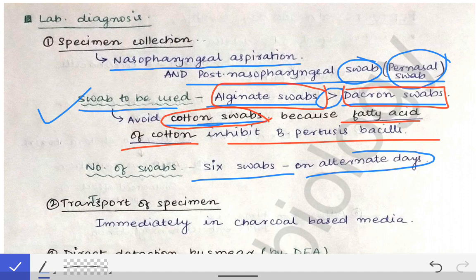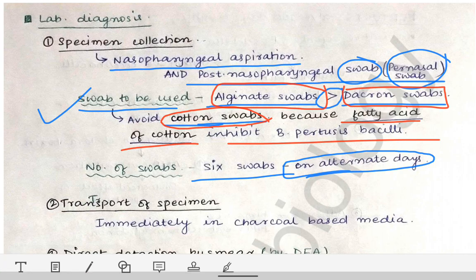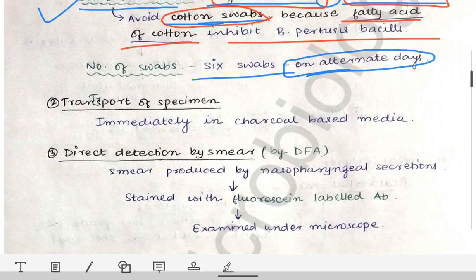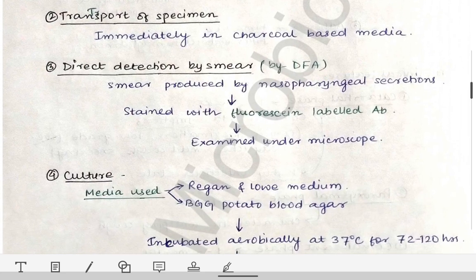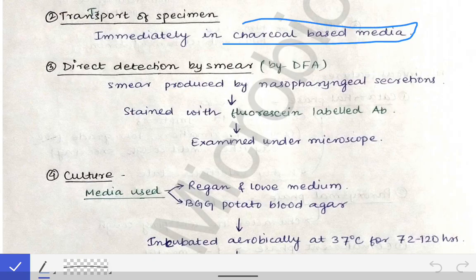A total of six swabs are collected, and collection of specimens is done on alternate days — you collect today, then on the third day, then the sixth day, and so on. The transport of the specimen is done in a charcoal-based media.